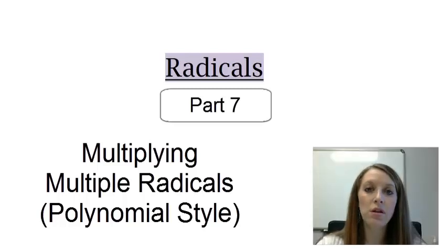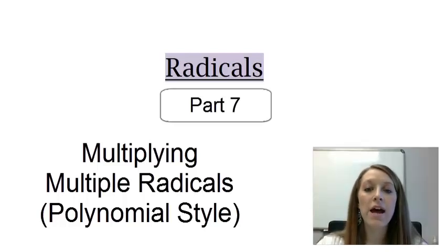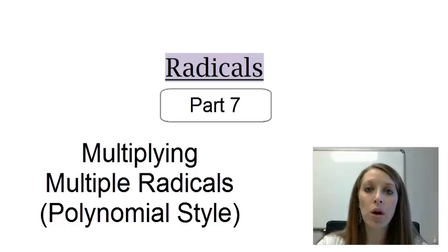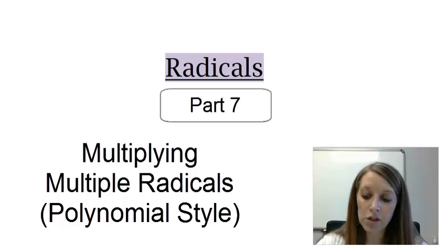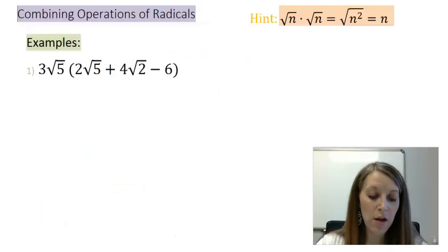We've learned how to do the basic operations with radicals — how to simplify them, how to add, subtract, multiply, and divide them. But now we're going to see more complicated problems. Think back to polynomial style with radicals involved — distributing, foiling, and so on. Let me show you some examples of what we're going to be doing in this video. Here we have a distribution.